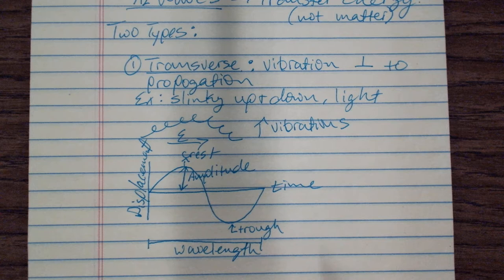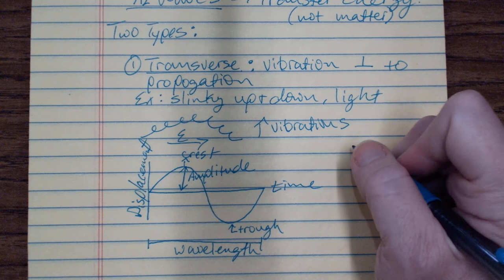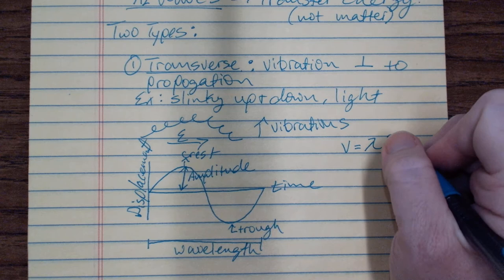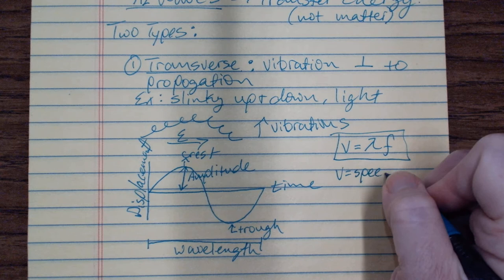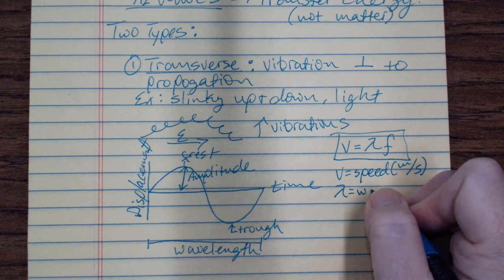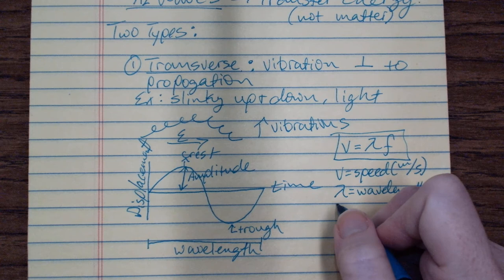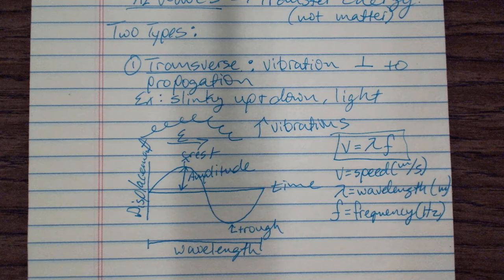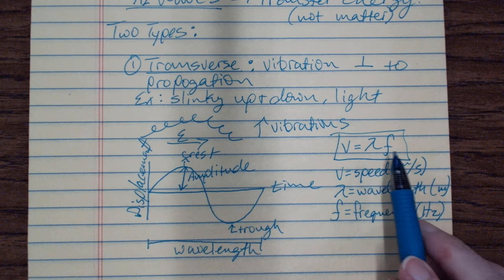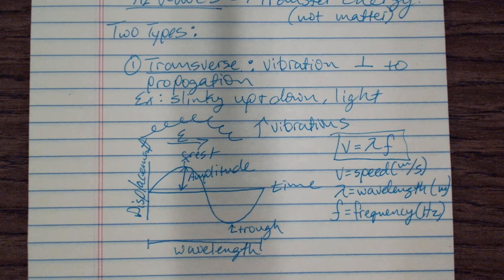There's an equation you probably learned in chemistry: the velocity of a wave equals the wavelength times the frequency — the number of times the wave passes by a given point per second. This is on your equation sheet. V is speed or velocity in meters per second, lambda is wavelength in meters, and f is frequency in hertz — which is cycles per second, or one over seconds. So meters times one over seconds gives you meters per second.